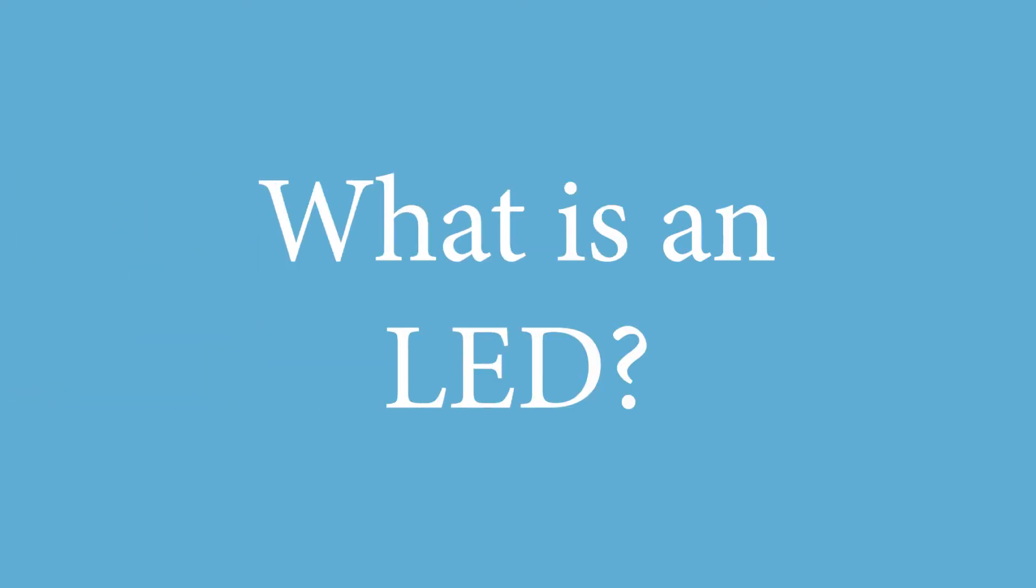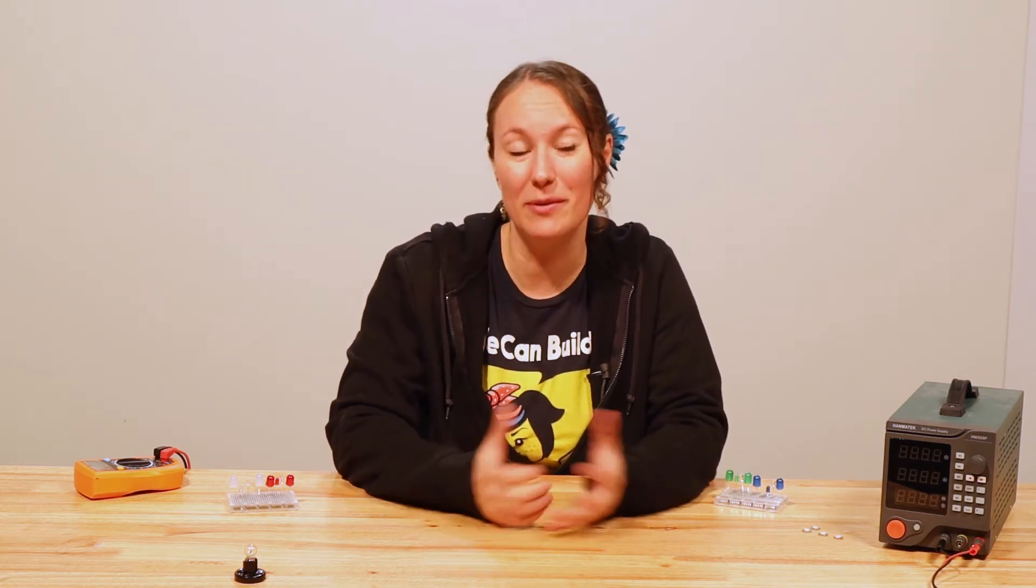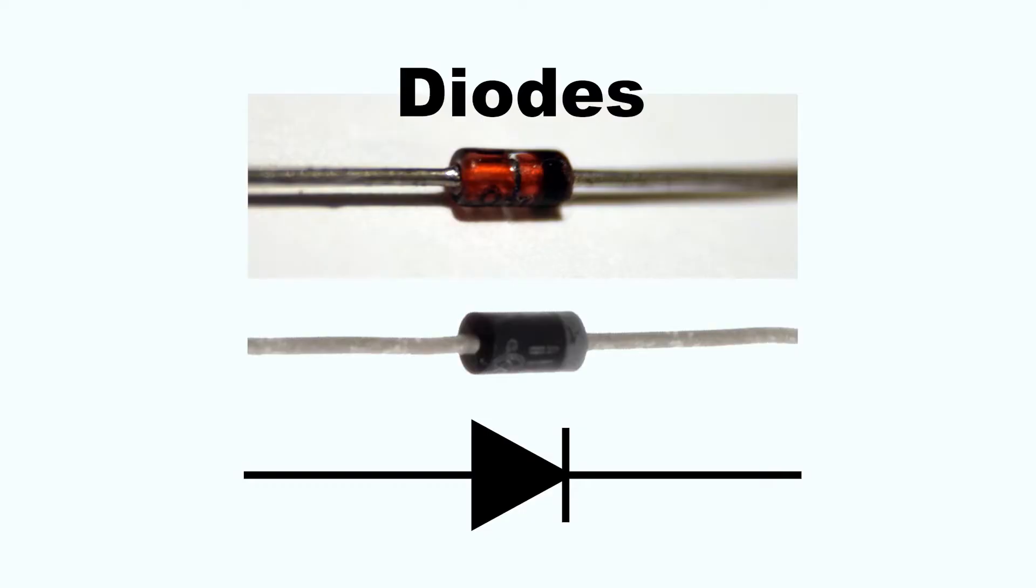What is an LED? LED stands for Light Emitting Diode. It's a diode that emits light. It lights up. But what's a diode? A diode is a component in which electric current can only flow in one direction.